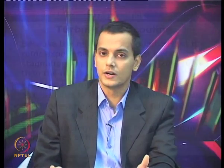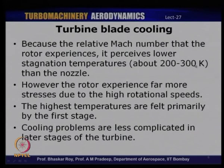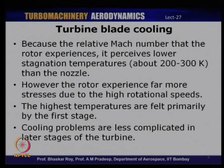The nozzle is subject to more severe operating conditions in terms of temperature, while the rotor experiences far more stresses due to high rotational speeds, experiencing a stagnation temperature probably 200 to 300 Kelvin lower than the nozzle. The highest temperatures are basically felt in the first stage, and as you move towards the later stages, the cooling problems become less and less complicated — which is obvious, because later stages do not really have as high a temperature as the initial stages of a turbine.